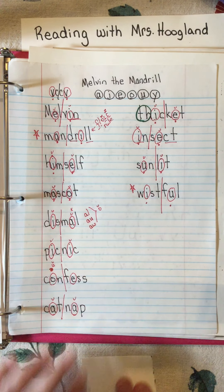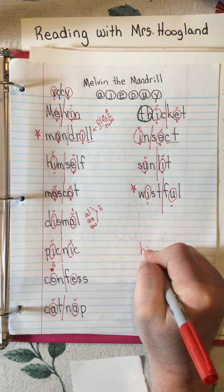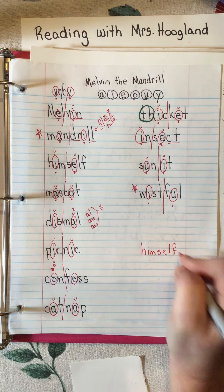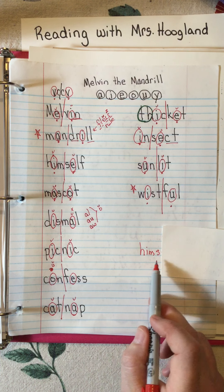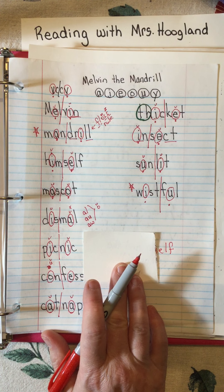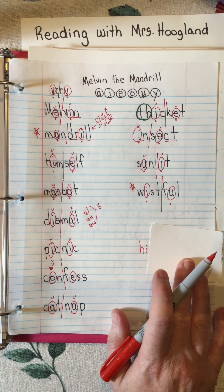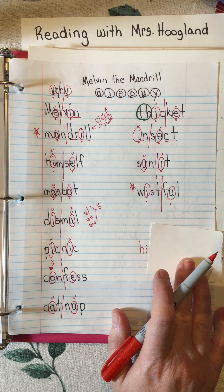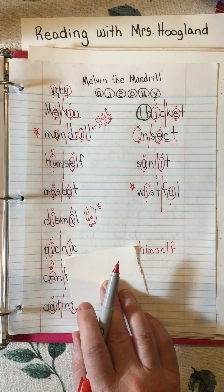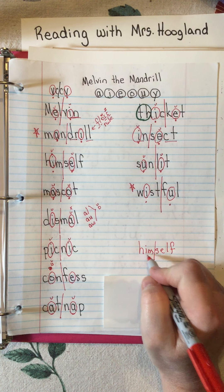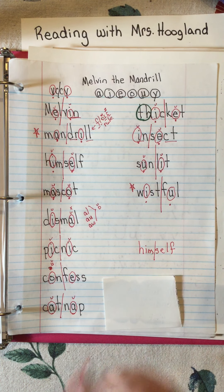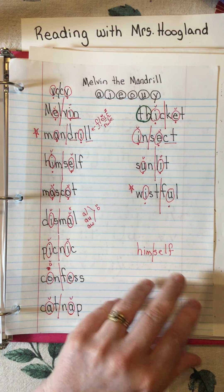If I were to pronounce words incorrectly - take 'himself' - if I split it wrong here, it would be 'him's elf.' That's not right! Or if I split it here, it'd be 'hi' because it's an open syllable: 'hi-himself.' So it makes a big difference where you split these words. That's why we split right between the consonants in the vowel-consonant-consonant-vowel pattern.